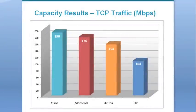The TCP capacity results are a cumulative number representing the total throughput delivered downstream to all 20 clients. The 2.4 GHz radio and 5 GHz radio results are added together to measure aggregate dual radio performance. In this situation, Cisco delivered 190 Mbps of TCP throughput in this high density situation, well above other vendors.